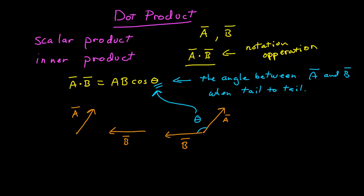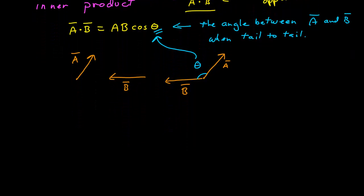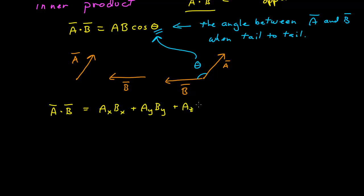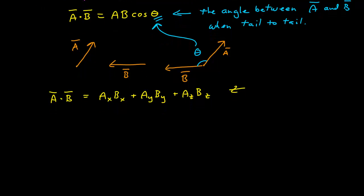That's one way we can calculate the dot product. Another way is that if the components are known, we can calculate the dot product by the x-component of A times the x-component of B, plus the y-component of A times the y-component of B, plus — if we have a z-component — the z-component of A times the z-component of B. This becomes an easy way to calculate it if we know the component form.